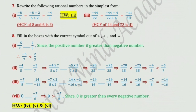Second one: minus 4 upon 5 and minus 5 upon 7. LCM of 5 and 7 is 35. Multiply: minus 4 upon 5 by 7 gives minus 28 upon 35, and minus 5 upon 7 by 5 gives minus 25 upon 35. Therefore, minus 28 upon 35 is less than minus 25 upon 35. Third one: minus 7 upon 8 and 14 upon minus 16. Converting to the same denominator gives minus 14 upon 16 and minus 14 upon 16. Both are equal, therefore minus 7 upon 8 is equal to 14 upon minus 16.